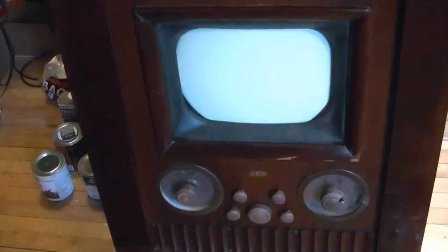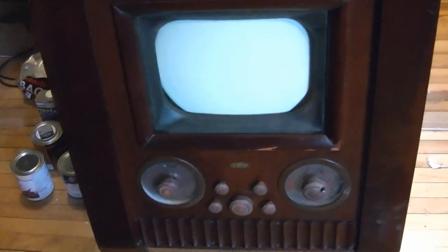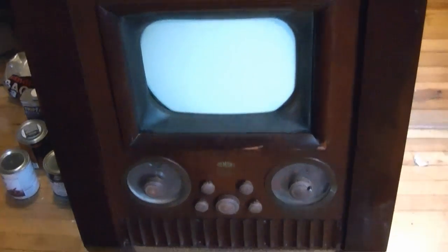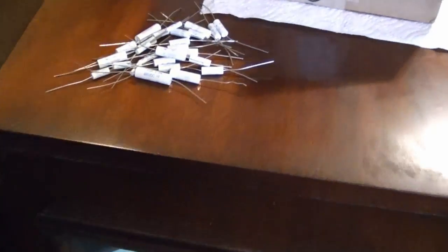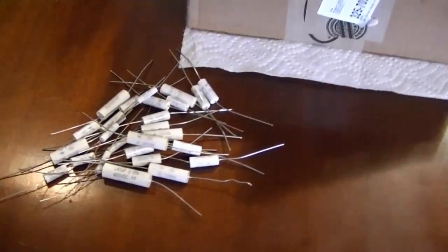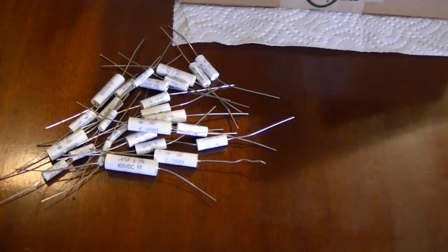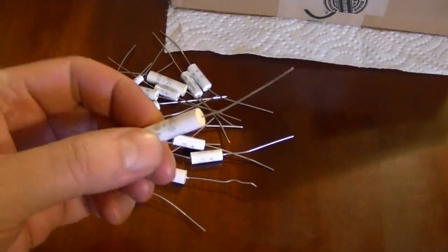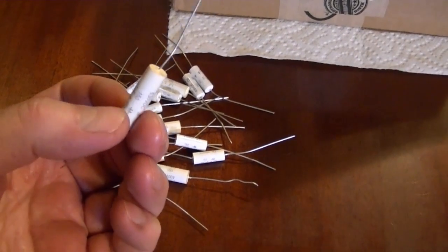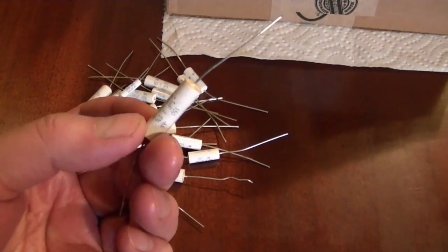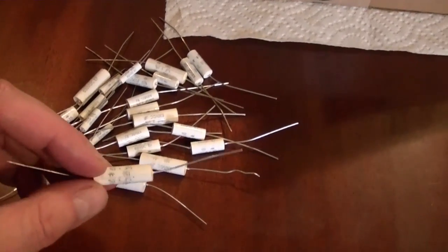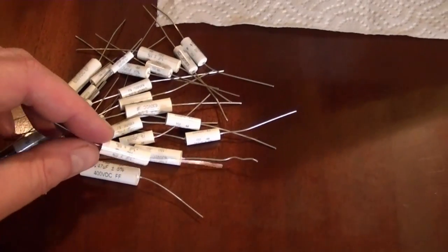Hey guys, now I don't want to get your hopes up that I'm diving into restoring this Dumont Clifton right now, but I did go ahead and order up some parts. Partly because I'm worried about the availability of some of these in the future, especially these axial plastic film capacitors. They're becoming scarcer and scarcer, and the prices are going up in favor of the radial variety, which I really don't want to use in this set.